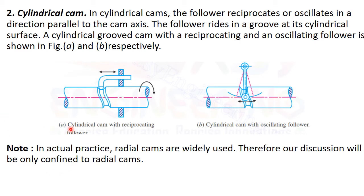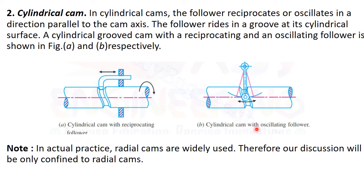In the diagram you can see that there is a cylinder with a groove cut on the cylindrical cam surface. When the cam rotates either clockwise or anticlockwise, the followers oscillate about the pin point. Here we can see both cases: cylindrical cam with reciprocating follower and cylindrical cam with oscillating follower.